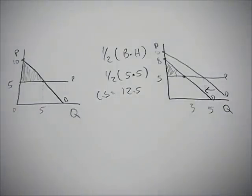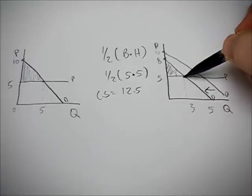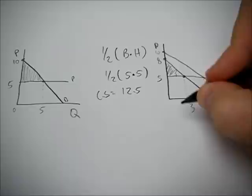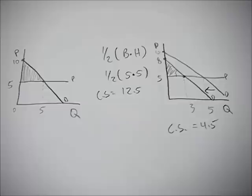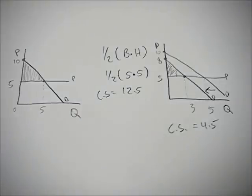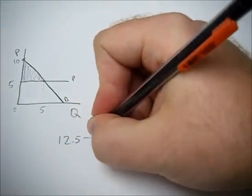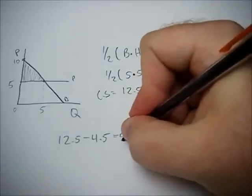How do we calculate the area of that? Well, it's going to be 1 half times base 3 times height 3. So our new consumer surplus is going to be 4.5. So if they ask us to calculate the difference in consumer surplus, it's going to be 12.5 minus 4.5. What is that going to give us? 8.